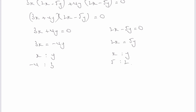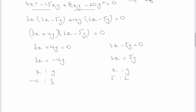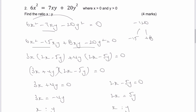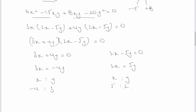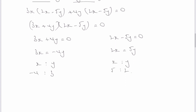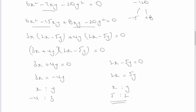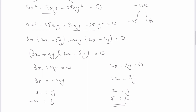Now if you remember from the very beginning, it said the values of x and y had to be positive, so therefore the answer to this particular question will be x is 5 and y is 2, and that will give you the answer to this question.